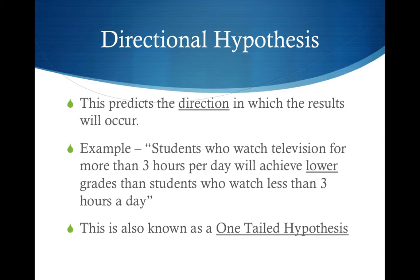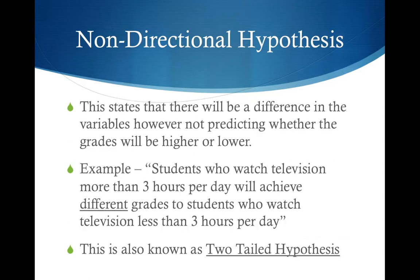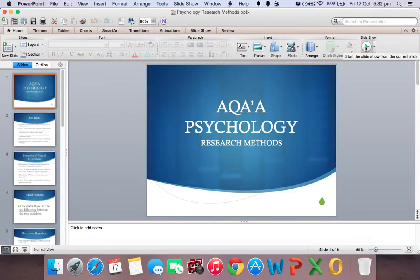A non-directional hypothesis states that there will be a difference, but does not predict whether it will be higher or lower. For example: 'Students who watch television for more than three hours per day will achieve different grades than those who watch less than three hours a day.' Notice it doesn't say better or worse. This is also known as a two-tailed hypothesis, because the result can go in either direction.